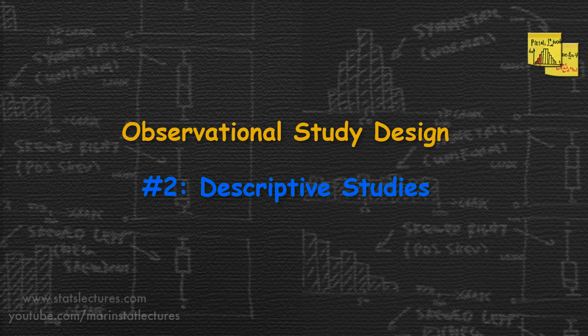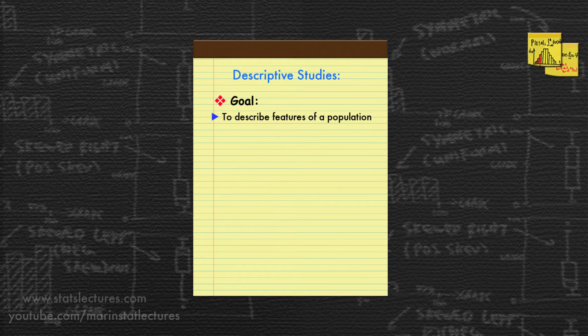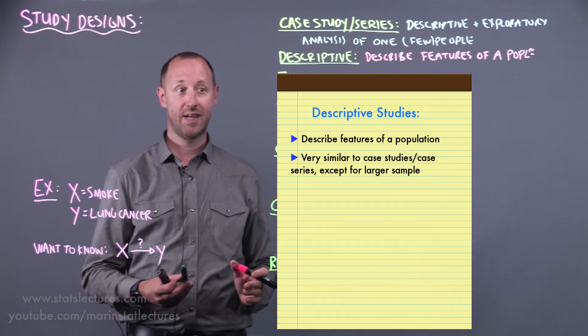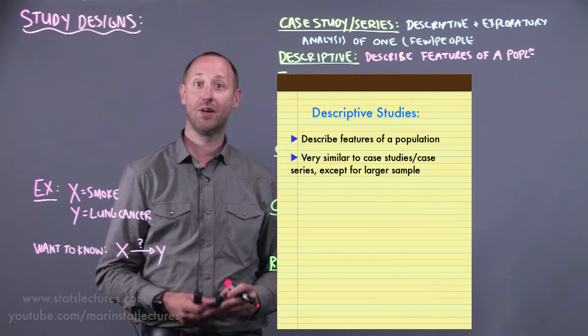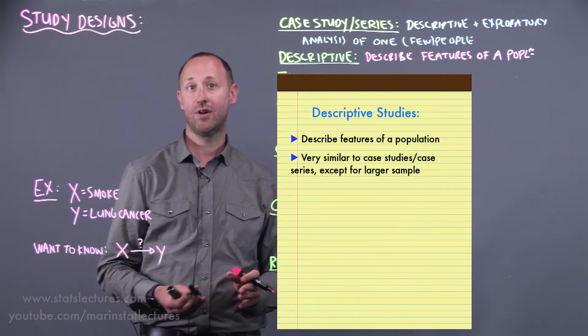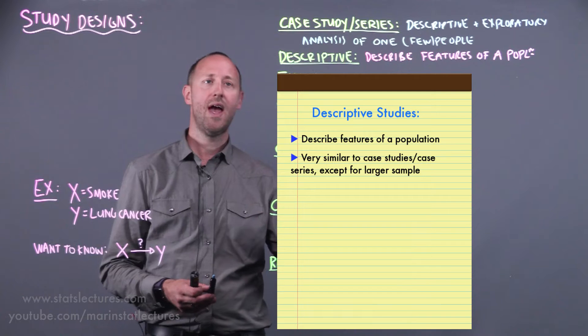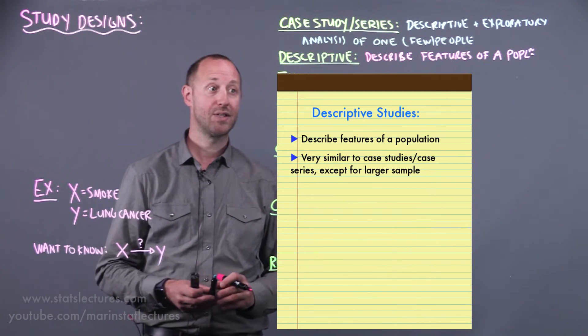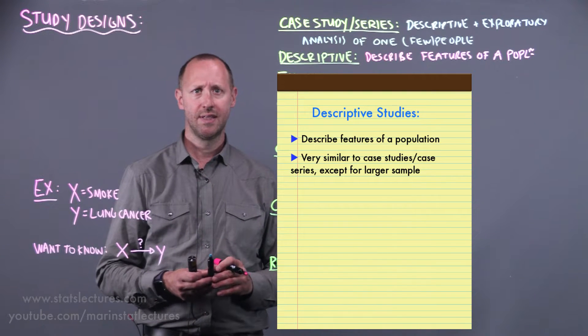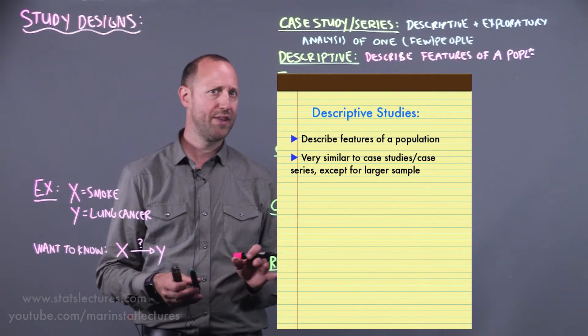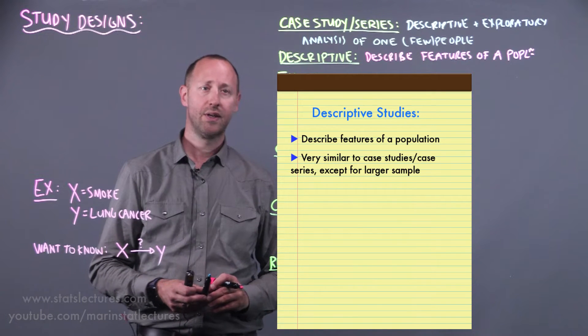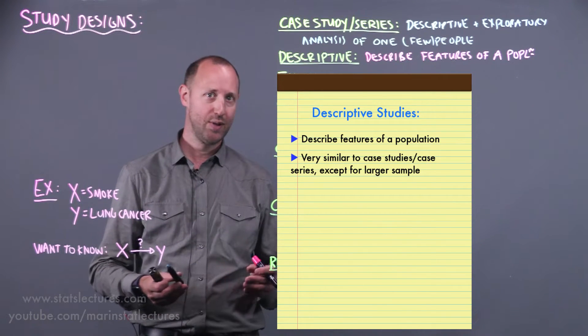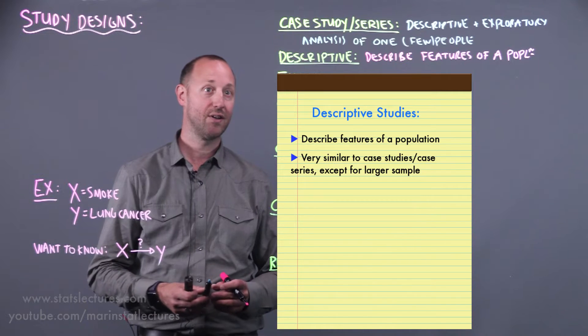Next are descriptive studies. These are very similar to case studies. The goal is just to describe features of a population. They're very similar to case studies or a case series except here we have a larger sample. We might have a larger number of people with lung cancer and we try and describe them. What might happen here is we might notice that people with lung cancer seem to be smoking a lot or maybe smoking more than the general population. This might lead us to a testable hypothesis: do we think that the smoking is having an effect on the lung cancer?